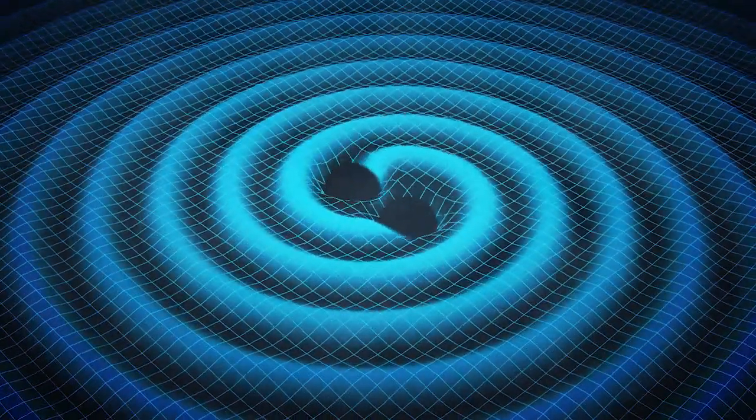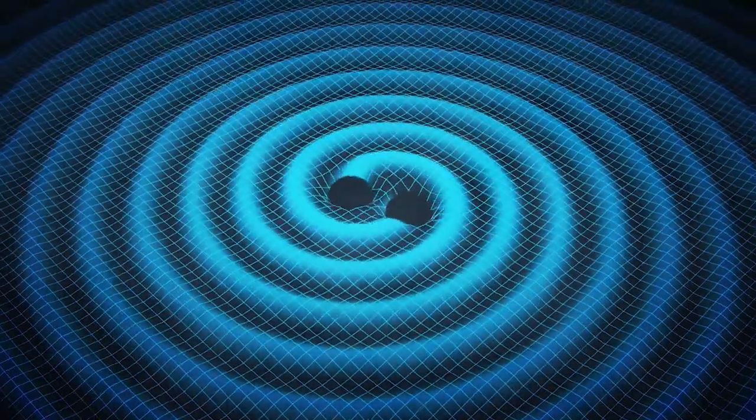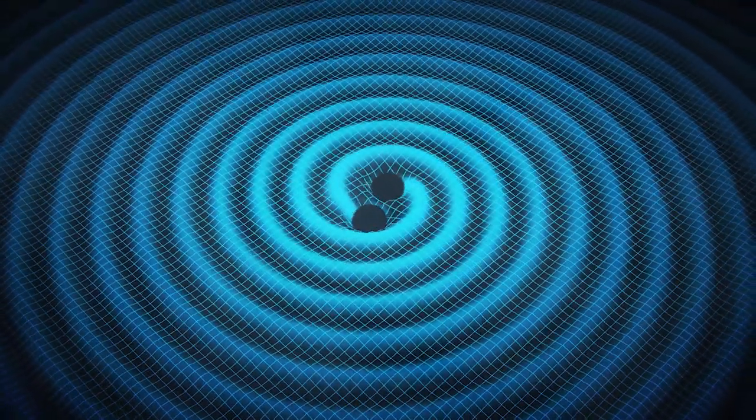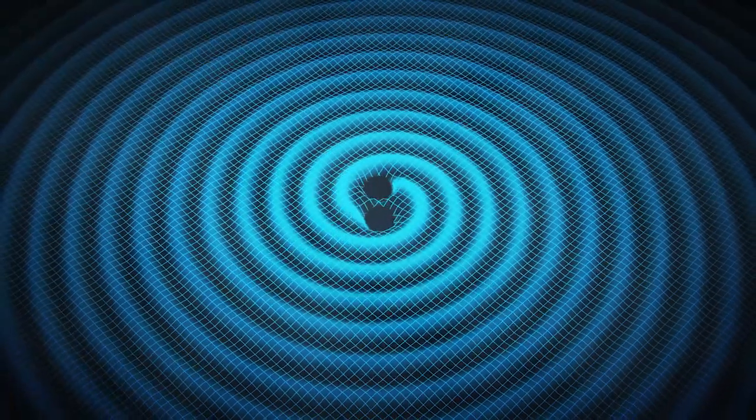A key prediction of Einstein's general theory of relativity is that pairs of black holes cause travelling ripples in the structure of space itself, known as gravitational waves.